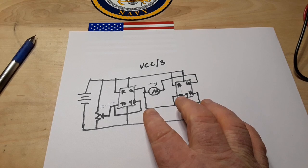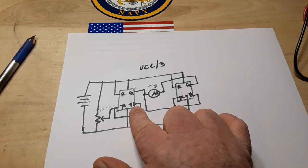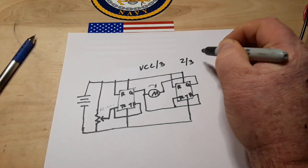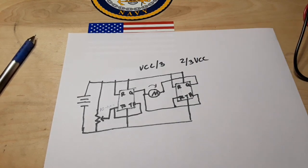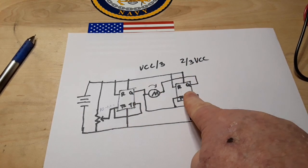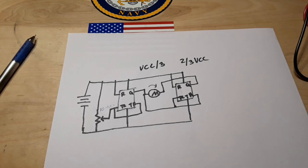Now when we move the pot in the other direction, our threshold pin six goes above two-thirds VCC. That causes this 555 timer to act as a current sink and this one to act as a current source. That's really all there is to it. It's not complicated at all.